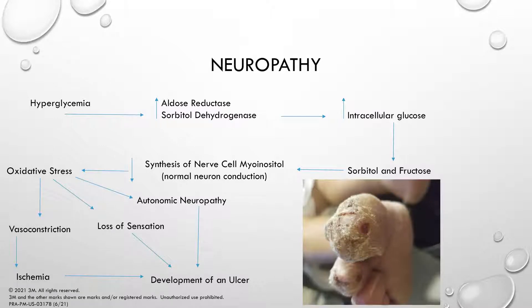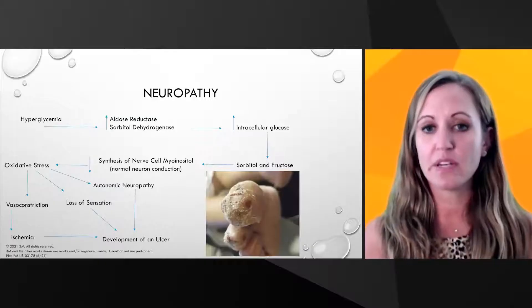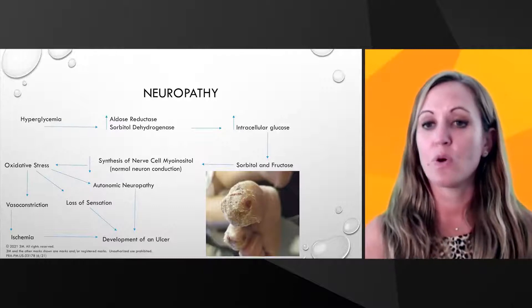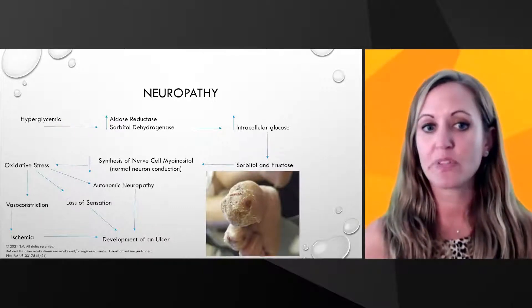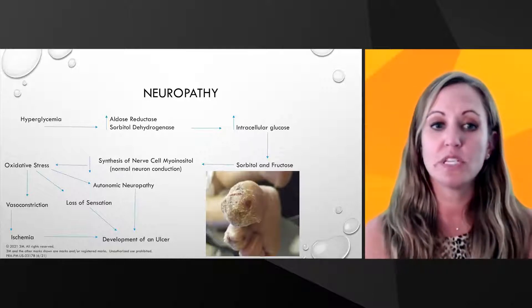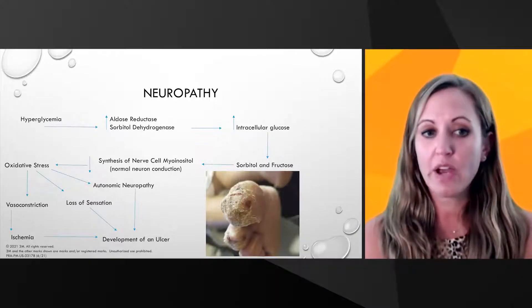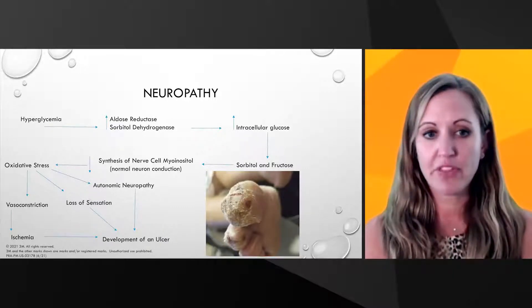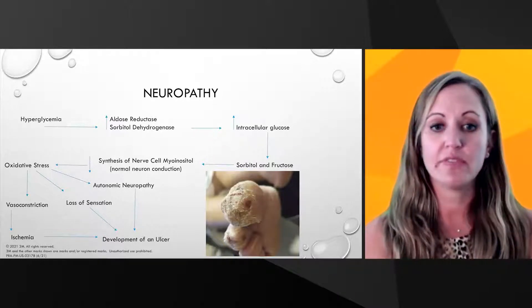When we look at neuropathy and the pathophysiology behind it, it is a huge spectrum that's completely connected. A patient in a hyperglycemic state — with really high blood sugar — experiences an increase in aldose reductase, sorbitol, and degeneratase, which leads to an increase in intracellular glucose. That increased intracellular glucose leads to sorbitol and fructose being metabolized into nerve cell synthesis. The high sugar starts to break down normal neuron conductivity, which leads to an increase in oxidative stress. That then leads to vasoconstriction, loss of sensation, autonomic neuropathy — and all of those things can lead to the development of an ulcer.